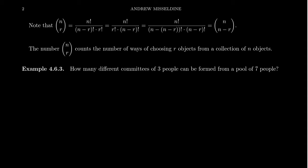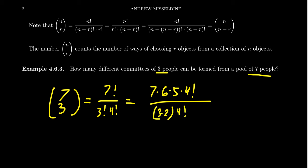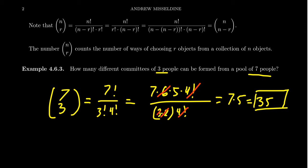So if we ask: how many different committees of three people can be formed from a pool of seven people? We need to choose three from seven — that's 7 choose 3. By the formula, that's 7 factorial over 3 factorial times 4 factorial. Writing 7 factorial as 7 times 6 times 5 times 4 factorial, the 4 factorials cancel. Then 3 times 2 cancels the 6, giving 7 times 5, which is 35. There are 35 possible committees.